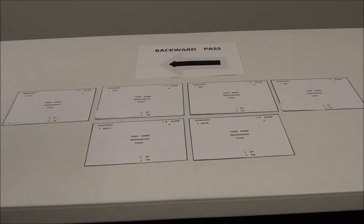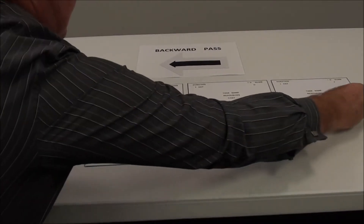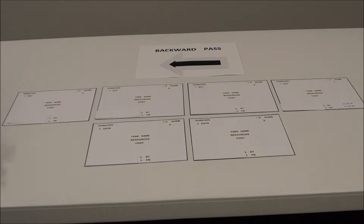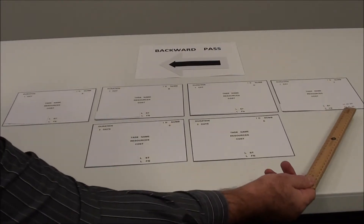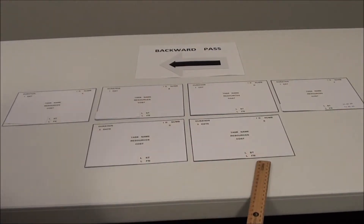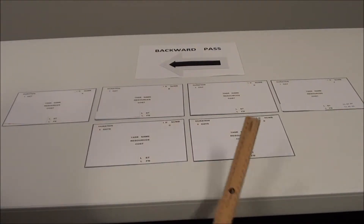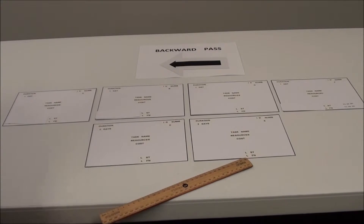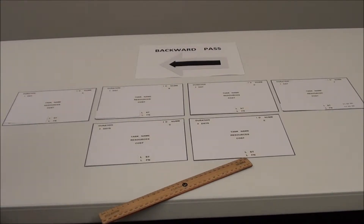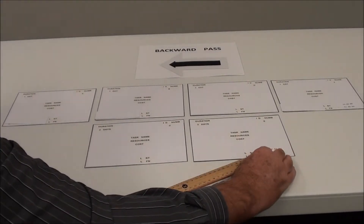So we're going to start at the far end this time — we are going to finish by Monday the 8th of August. We use the same relationships as we had going through a forward pass. If that task can't be started till Monday the 8th, this task here — the latest it could finish is Friday the 5th, and then the latest it could start is Thursday the 4th.